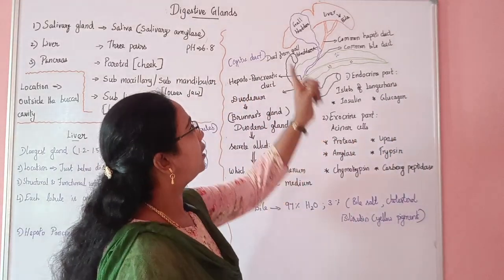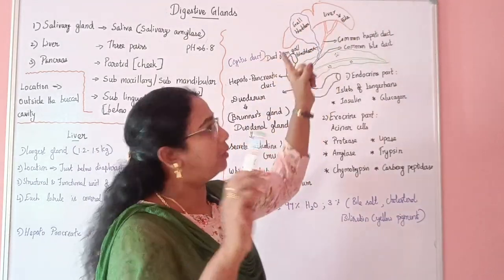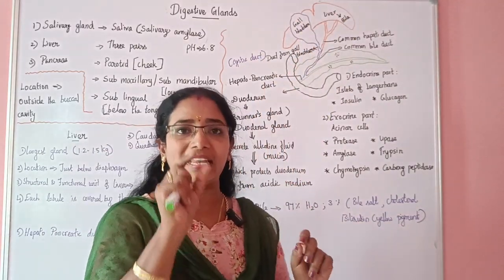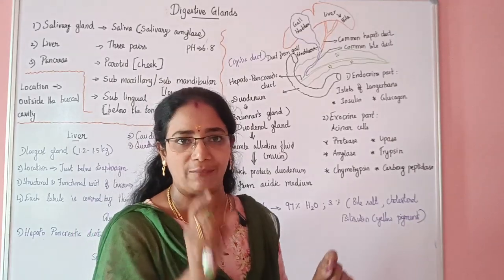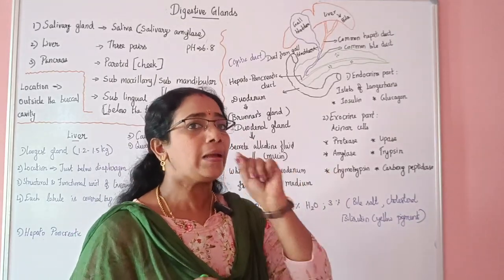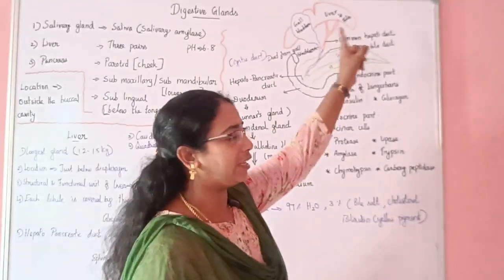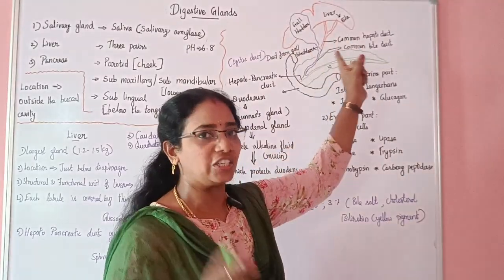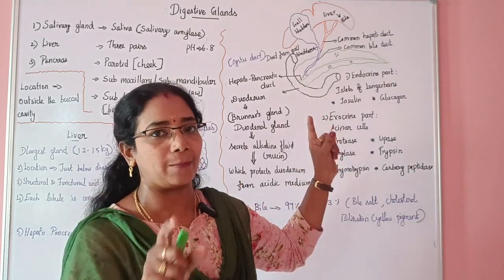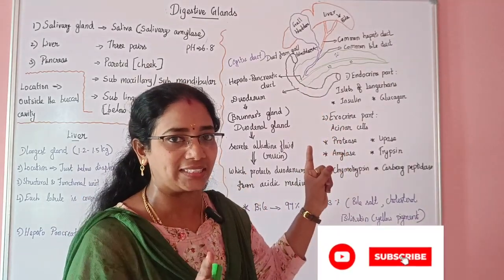The liver has a right lobe and a left lobe. The liver secretes bile juice. The mnemonic 'liver' — L for liver, bile for bile juice — helps remember that bile is the secretion produced by the liver.